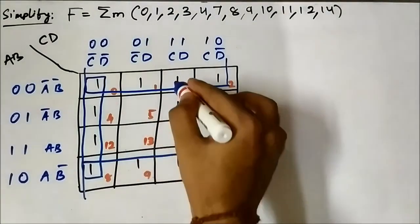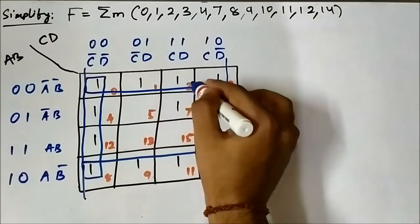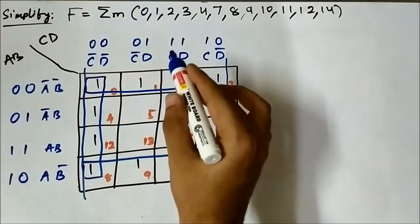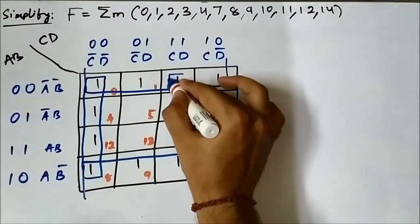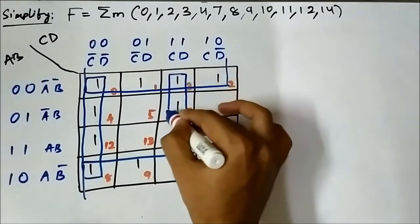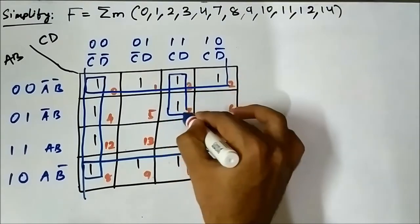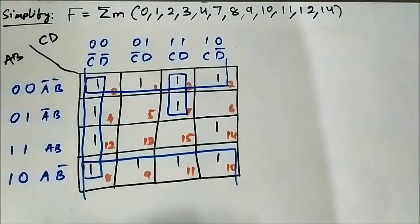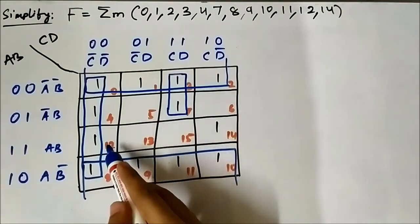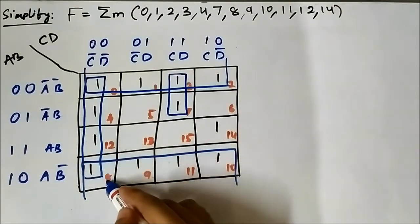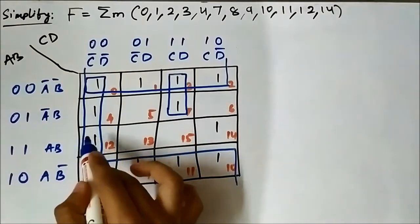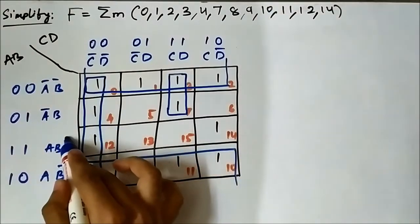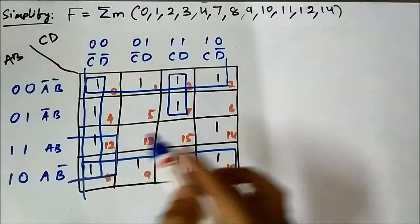Next, these 2 cells, 3 and 7 — we can form a pair. And now see cells 12, 8, 14, and 10. Here we can form a quad.